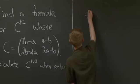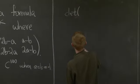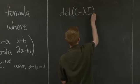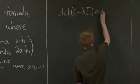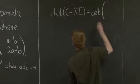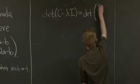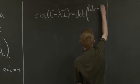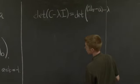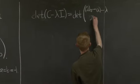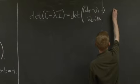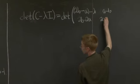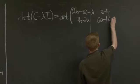We compute the determinant of C minus lambda I, which is just the determinant of this matrix: 2B minus A minus lambda, 2B minus 2A, A minus B, and 2A minus B minus lambda.